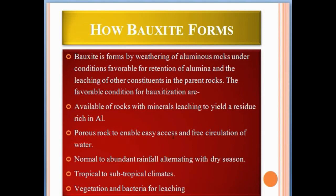These are the conditions for bauxite formation. Bauxite forms by leaching of aluminum from parent rocks. Very important factors for bauxite formation include tropical to subtropical climates, abundant rainfall, and porous rock in the surrounding area.